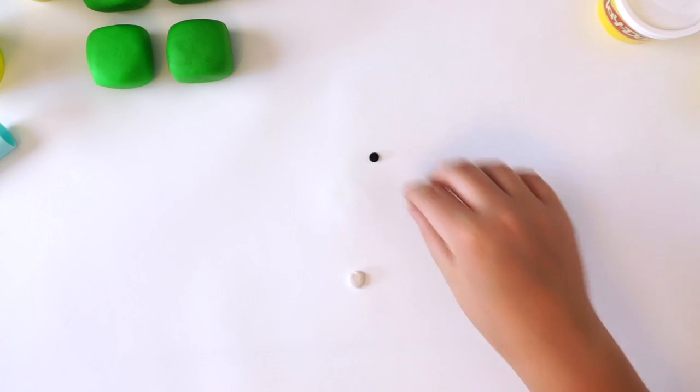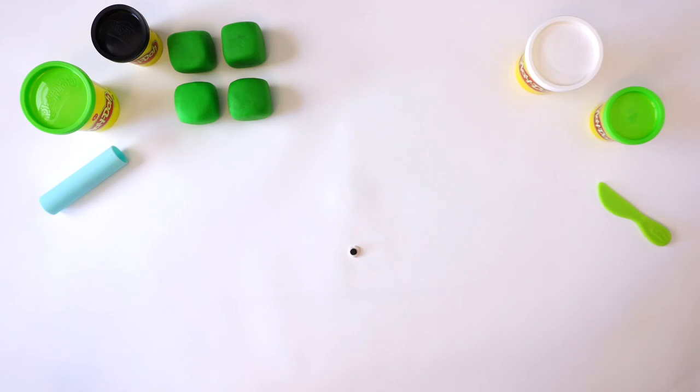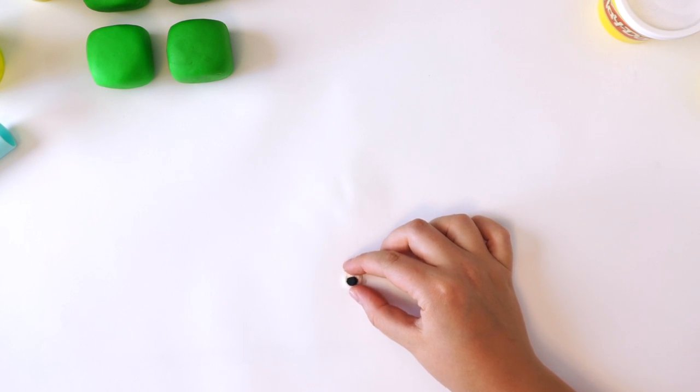Then, flatten it with your thumb. Roll a smaller ball of black Play-Doh. Flatten it and press it onto the middle of the white Play-Doh. Because four is a square, he has square eyes. Flatten off the sides to make the eyes square.